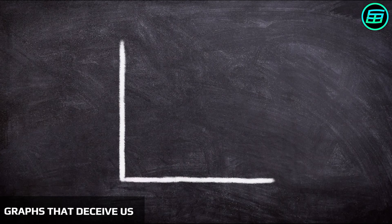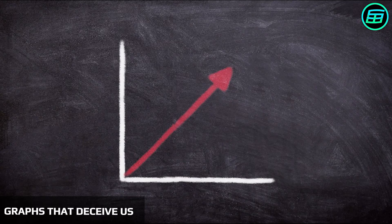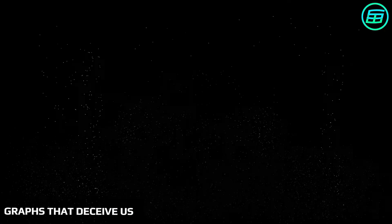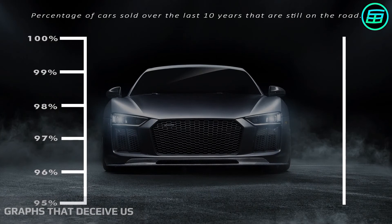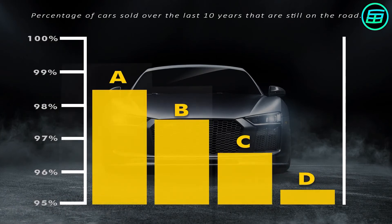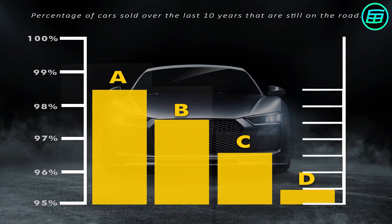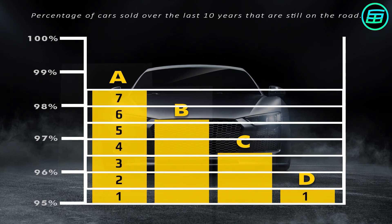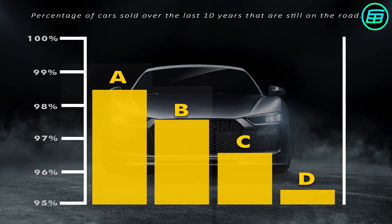How can graphs deceive us? There's a saying that numbers don't lie, but there are ways in which the story told by graphs can be deliberately manipulated without changing any of the numbers. Here's a magazine advertisement. At first glance, Company A seems to have a significant advantage over the other companies. But if we look at the vertical axis, it starts not at 0 but at 95. That means the last 5% is magnified, making it appear that Company A has a big advantage.